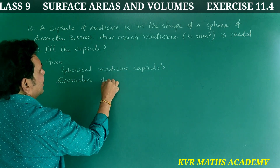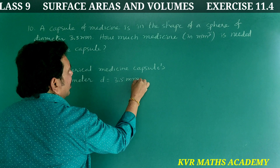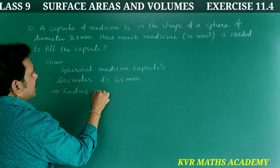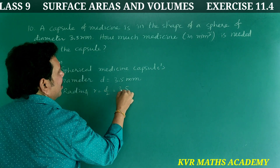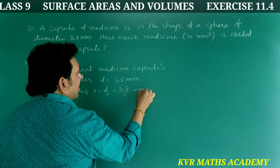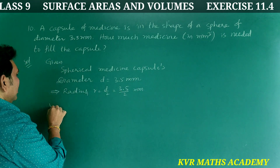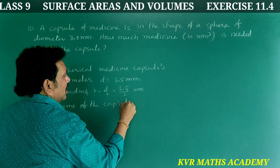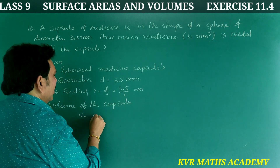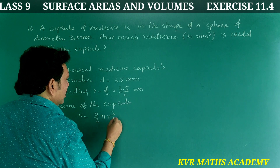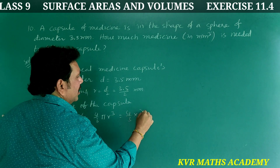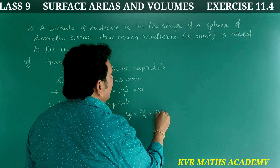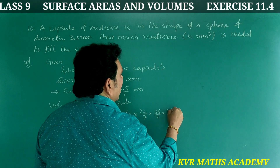Diameter d equals 3.5 millimeters. Therefore radius r equals d by 2 equals 3.5 by 2 millimeters. Volume of the capsule v equals 4 by 3 pi r cube equals 4 by 3 into 22 by 7 into (3.5 by 2) cube.